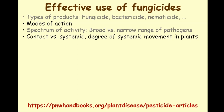There are different degrees of systemic movement of products that say 'systemic' on the label, and this is really, really important. Just because the label says systemic does not mean it will move throughout the entire plant. For most insecticides and herbicides, when the label says systemic, they truly do move almost throughout the plant — but it's very, very different for fungicides. Most fungicides that have the word systemic on the label are only limited in terms of how much they move systemically through the plant. If you learn nothing else from this seminar, this is probably one of the most important things to remember.